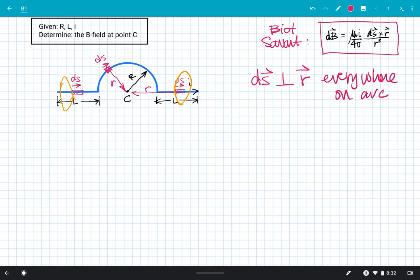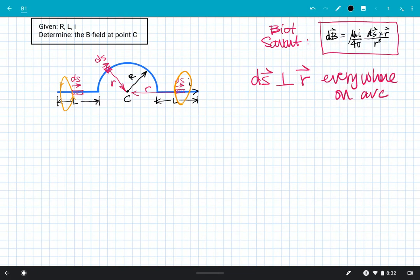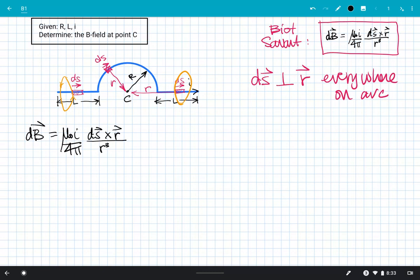All of the current contributes to B field at C because there are no parallel components between the vectors DS and R since it's a perfect semicircle. I'm going to take my Biot-Savart expression and spend a second with it here. I'll write it in magnitude.